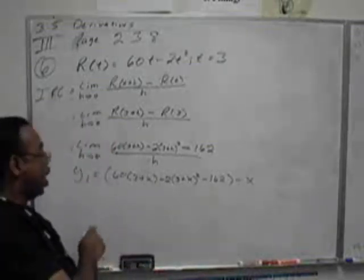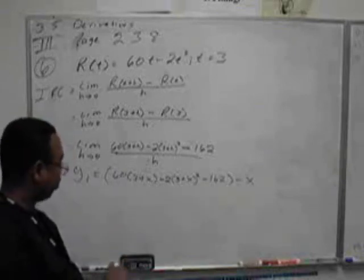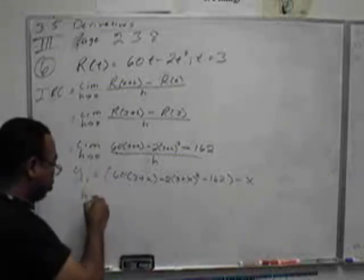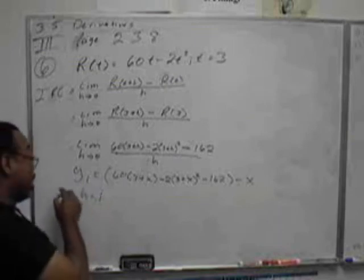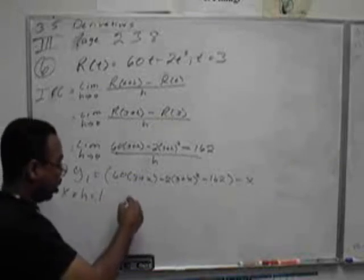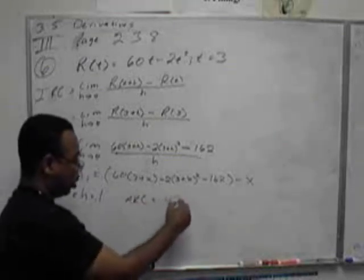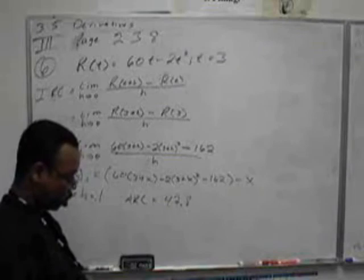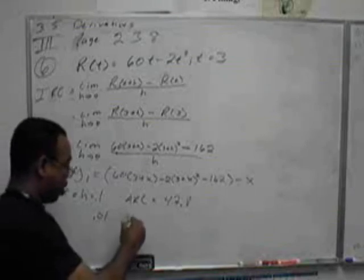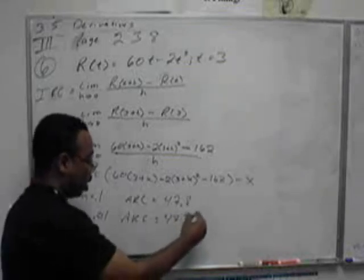Okay. As you put this into the calculator, we do a trace and we input, let's say, 0.1. If h is 0.1, or I should say x is 0.1, we're going to get an average rate of change of 47.8. If I type in 0.01, my average rate of change equals 47.98.